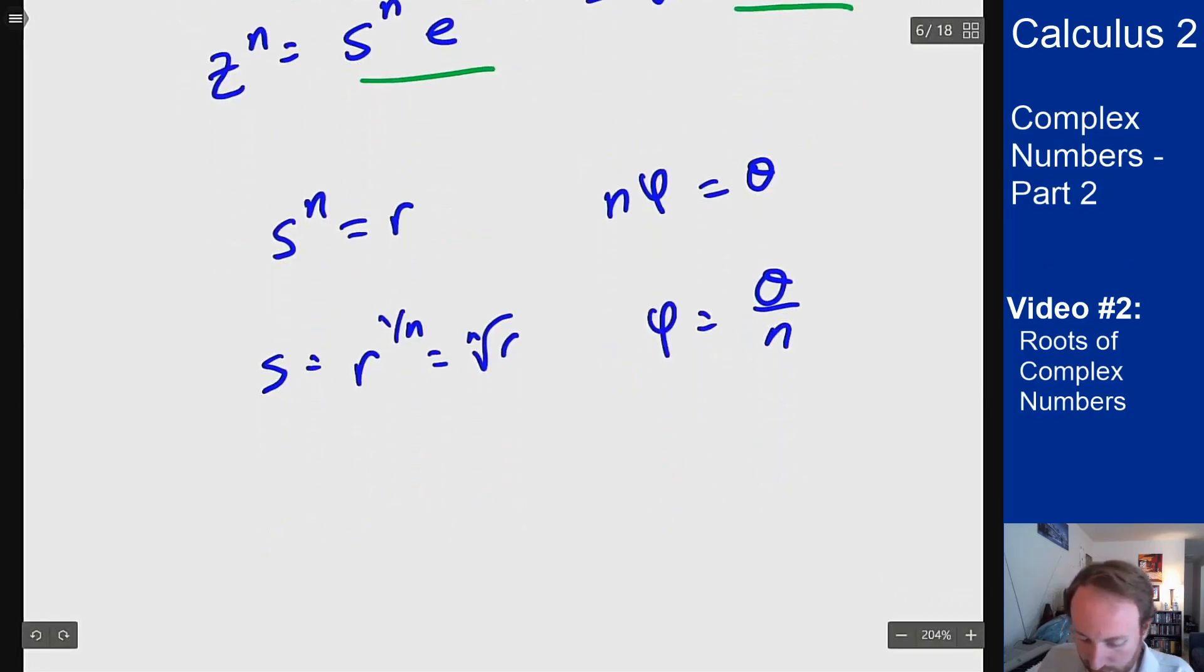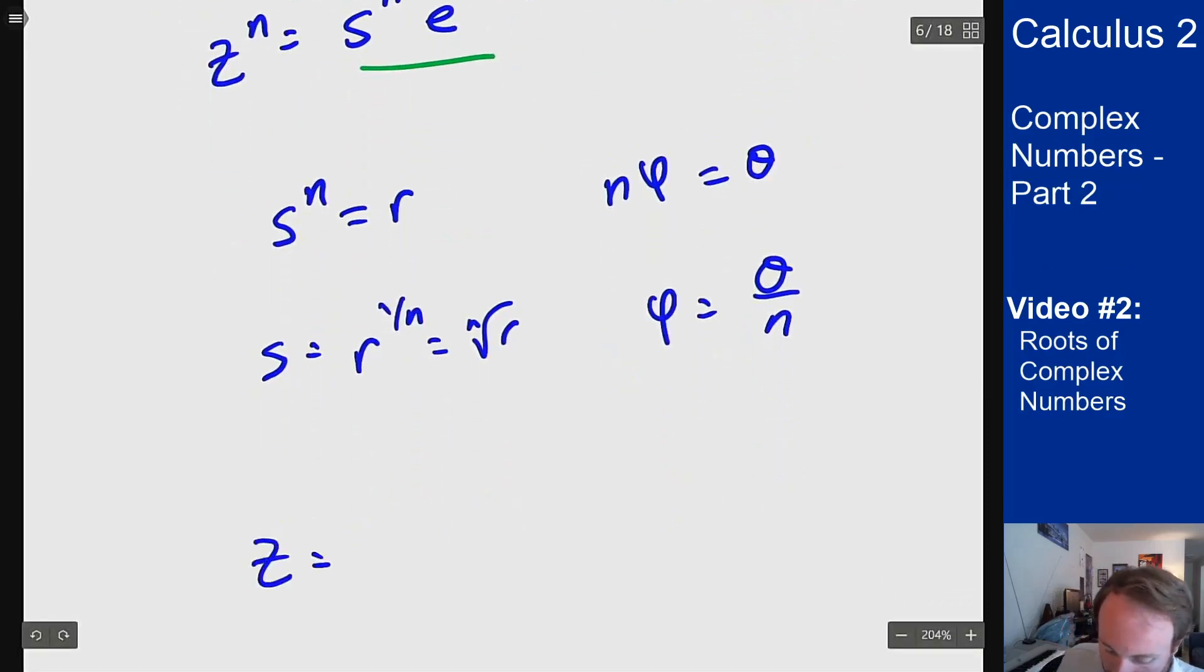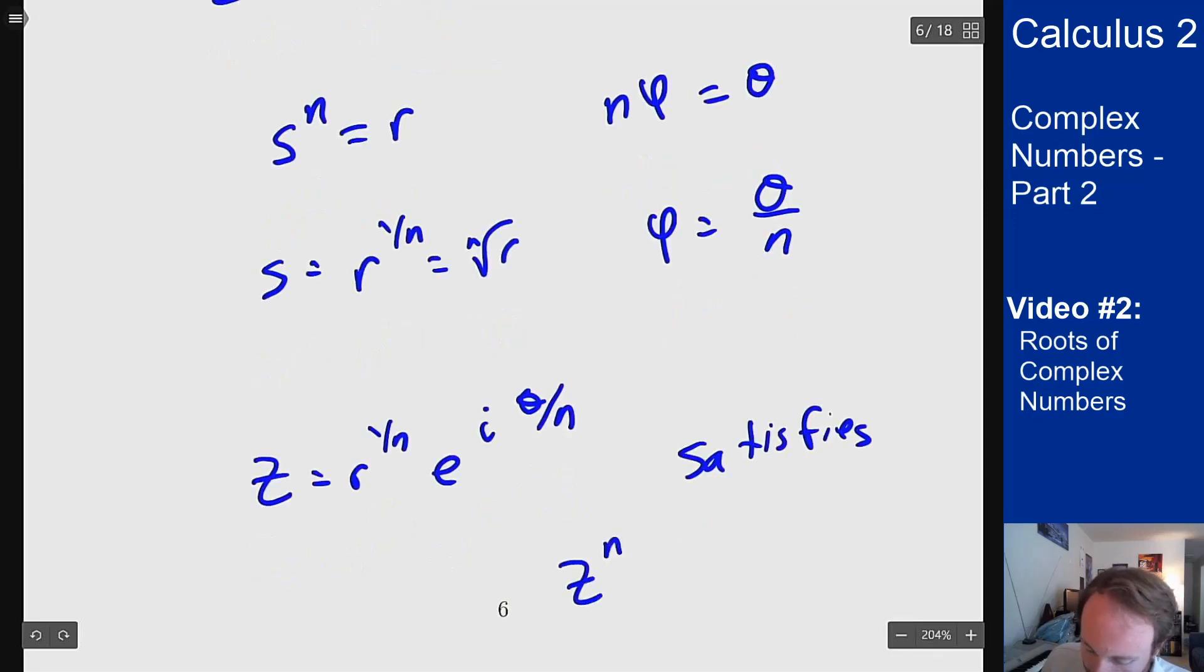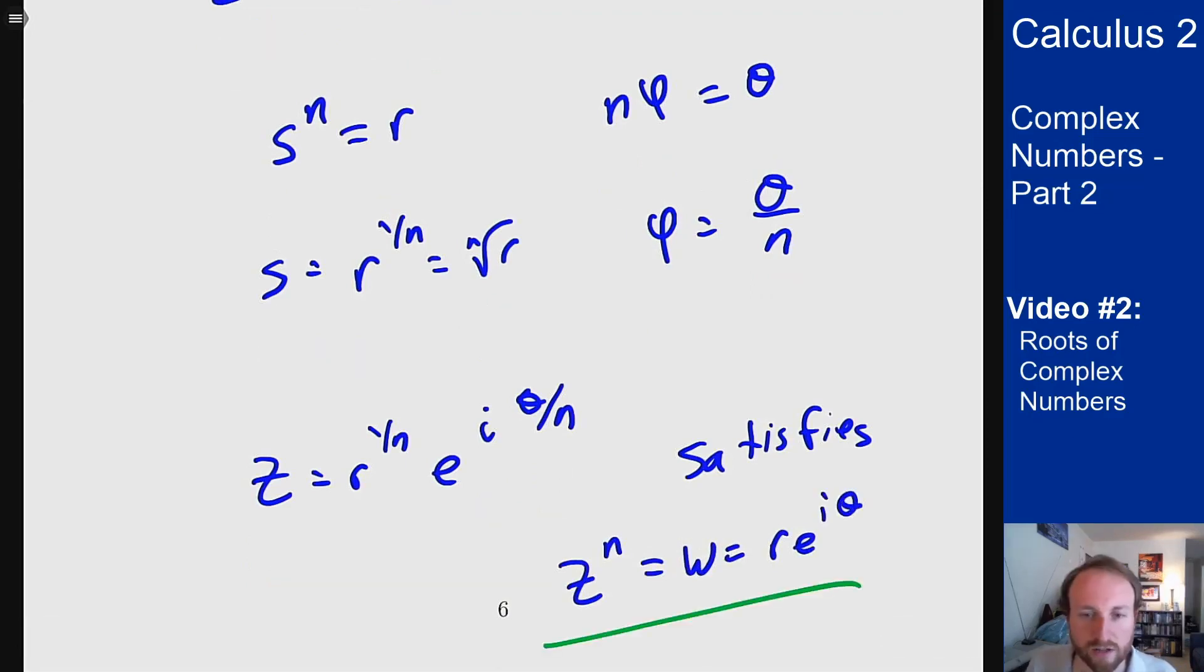I get a solution here of the form z equals r to the 1 over n e to the i theta over n which will satisfy z to the n equals w which was r e to the i theta. So that's a good start.